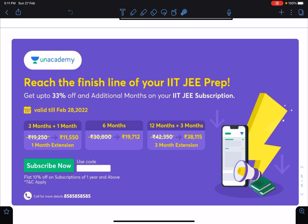As you already know, up to 33% off you are getting and some additional months also you are getting in Unacademy subscription. So 3 plus 1 month, 6 months, or 12 months if you are purchasing, you can get the extension here. You can use my code Nitin sir if you want to connect with me on Unacademy live classes.